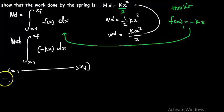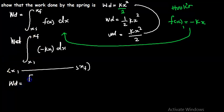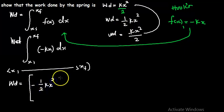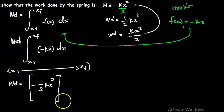To evaluate the limits, the work done — after integrating — is going to be negative a half kx squared, evaluated from x of i to x of f. At this point we have two different displacements: x of i and x of f.